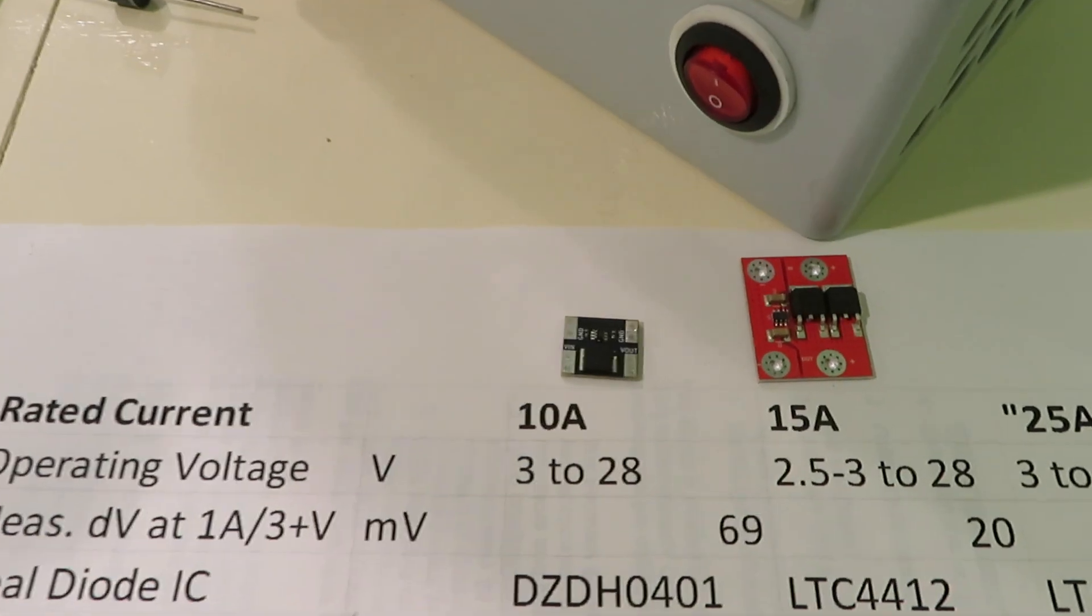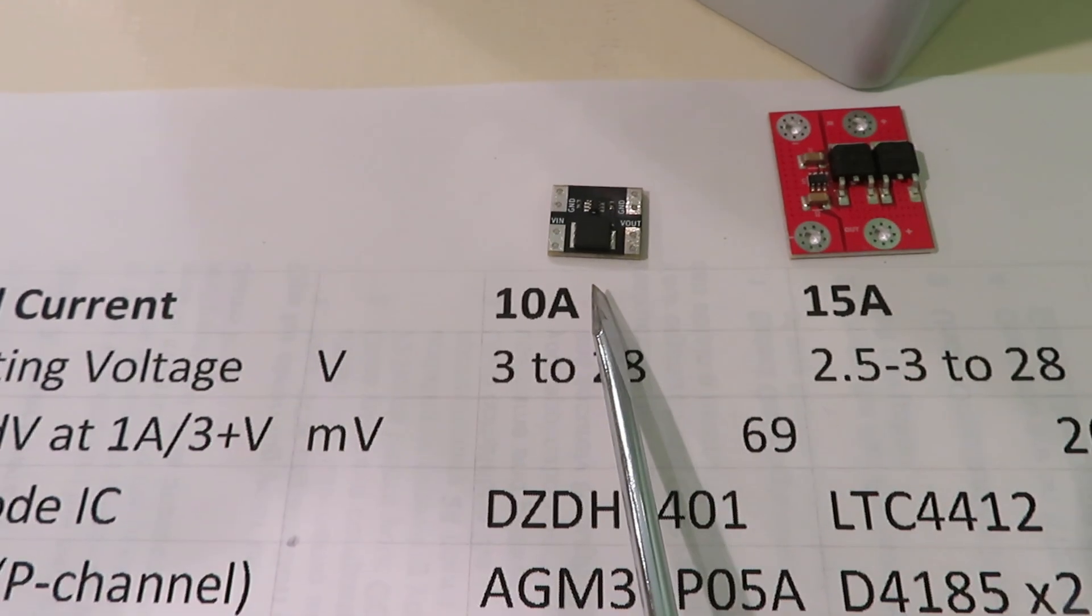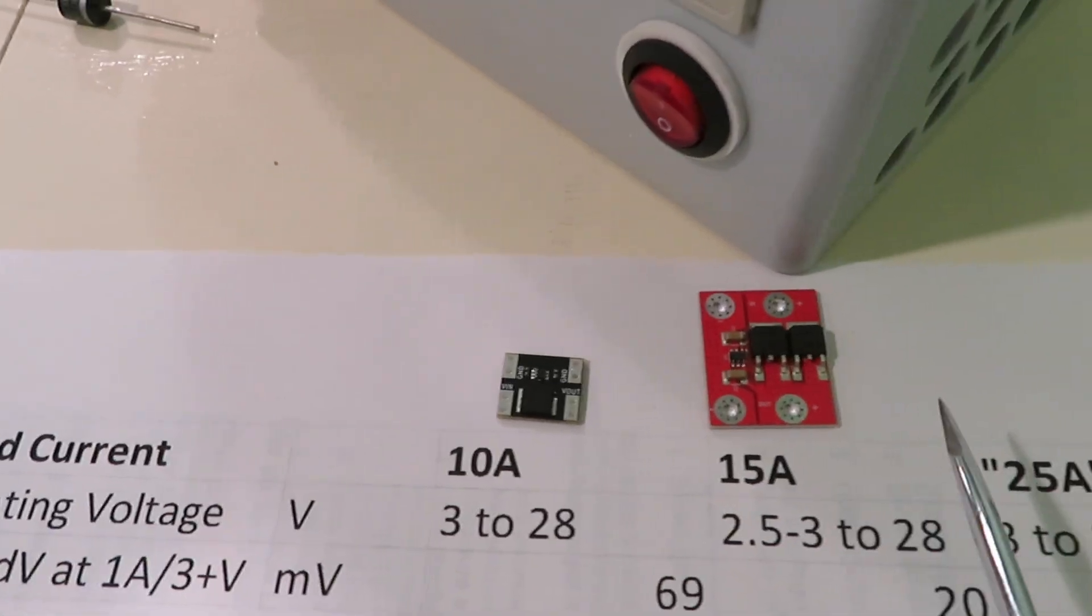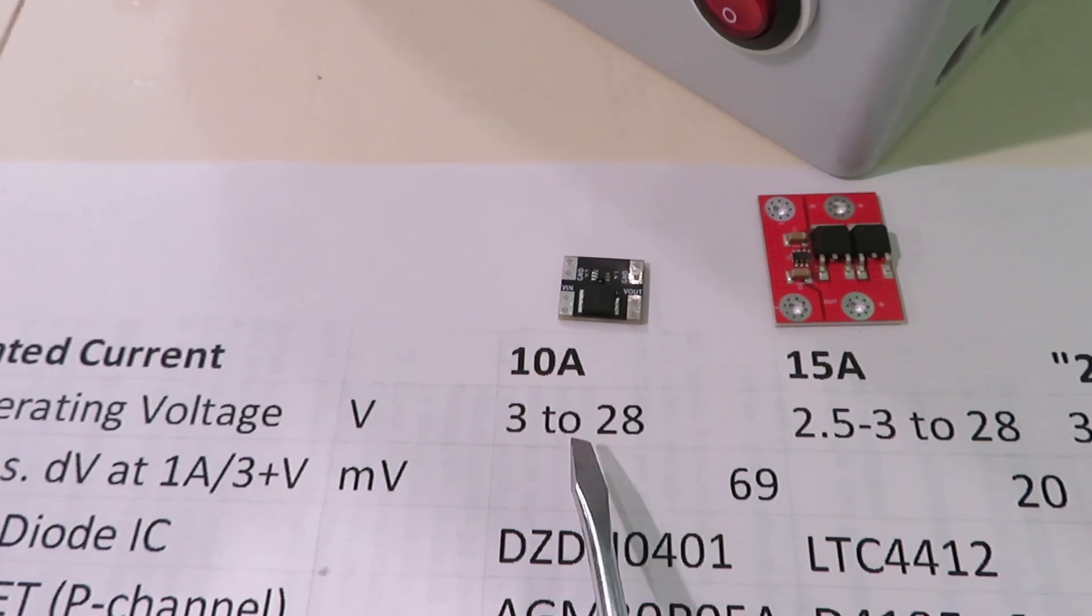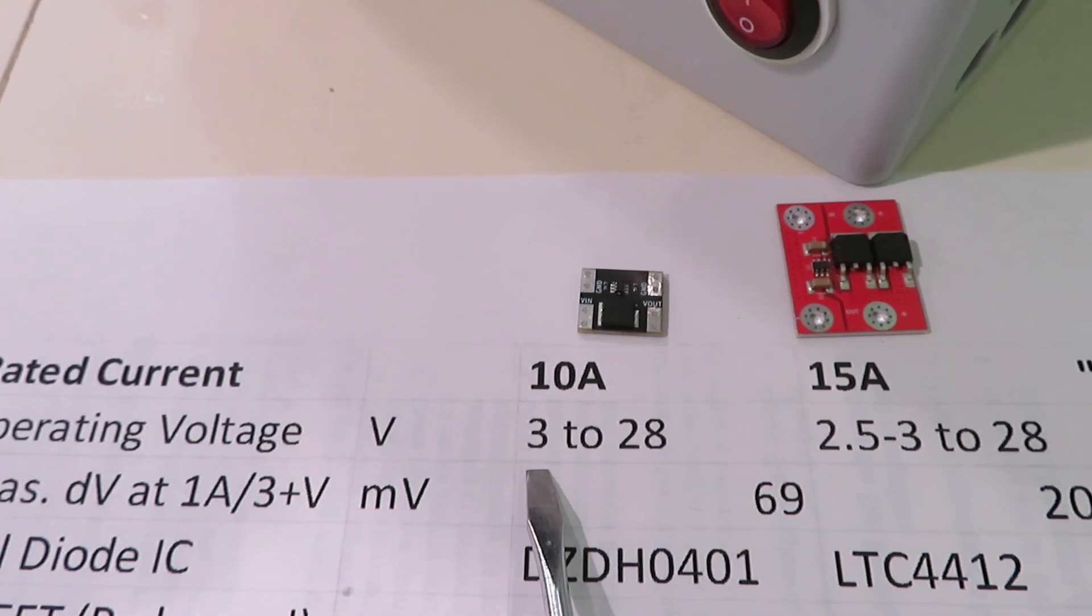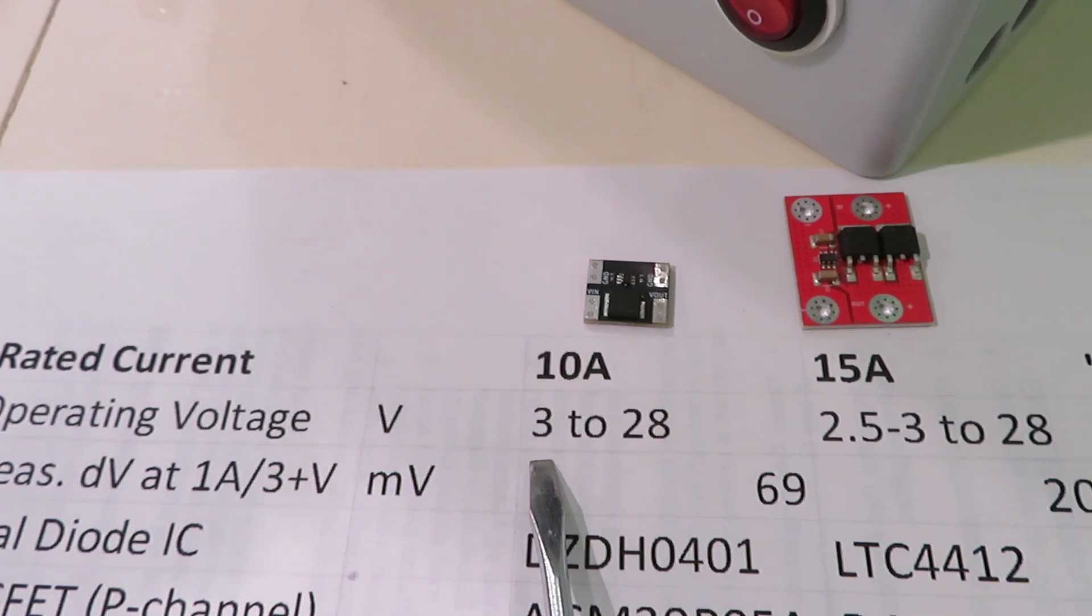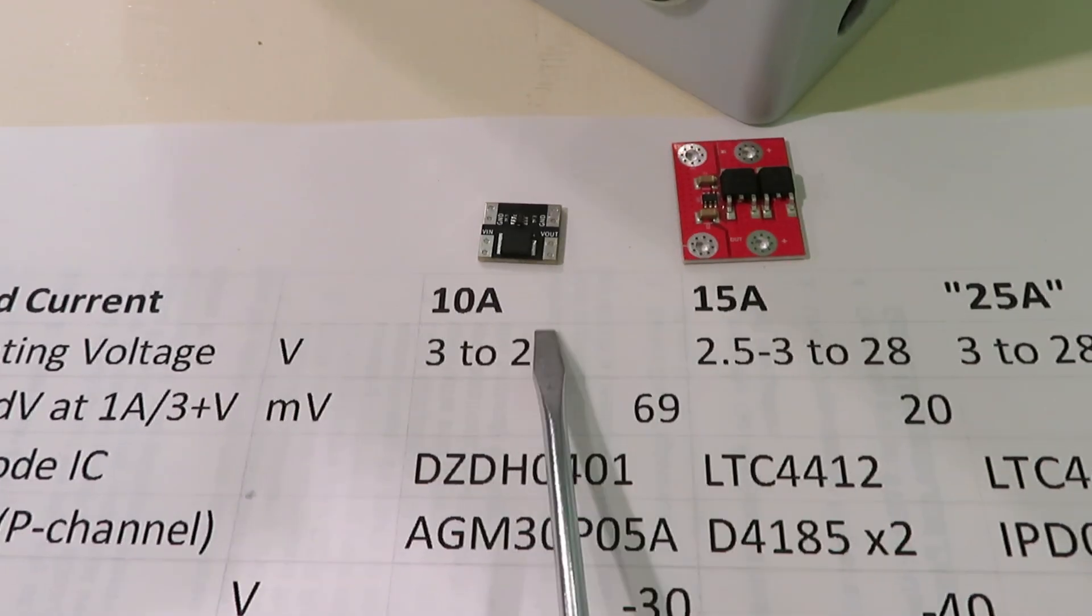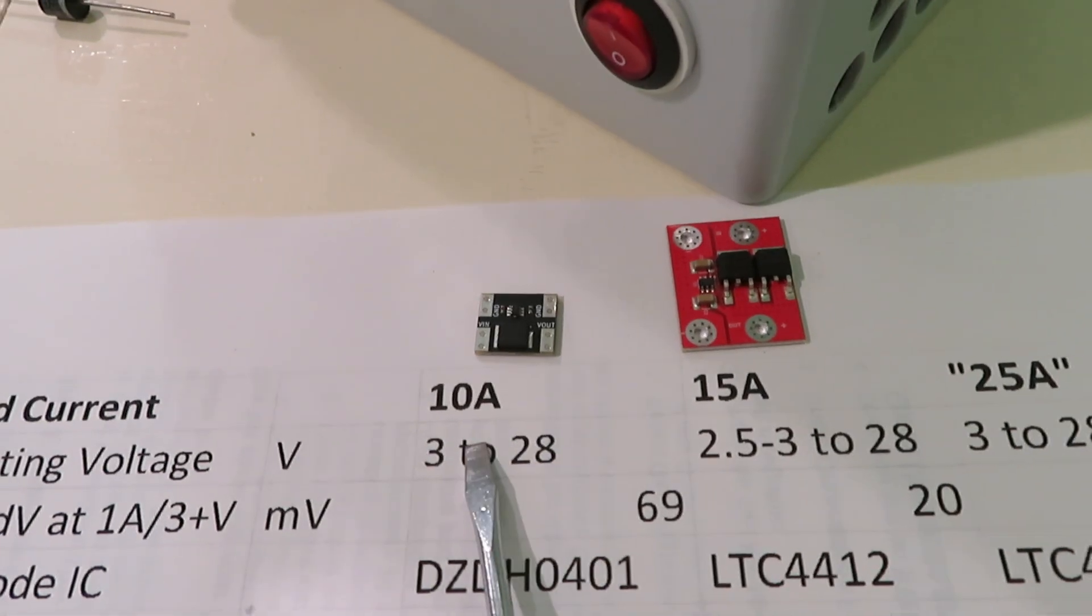An ideal diode has a very low voltage drop. This is a 10 amp ideal diode and this is a 15 amp ideal diode, but what I need is 25 amp. It's not easy to find an ideal diode that could charge down to 3 volts because it needs a certain voltage to drive the MOSFET. These are the only two that I could find commercially available that could charge down to 3 volts.